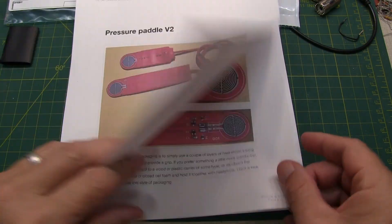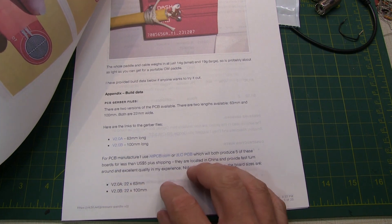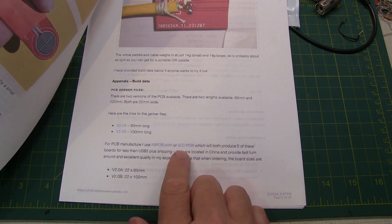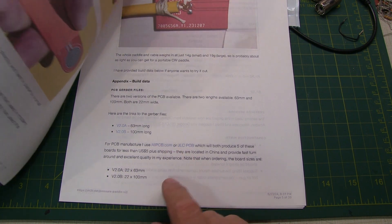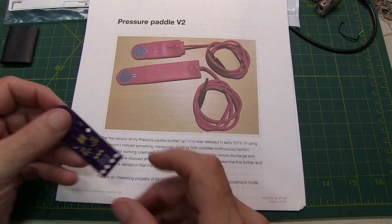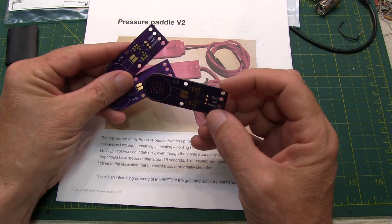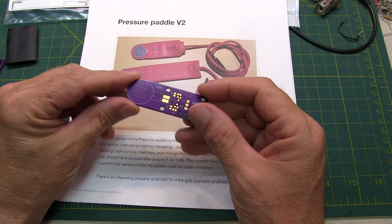Links to the printed circuit board design files are found in the blog as well, and you can go get them manufactured yourself from a number of different places. The author recommends allpcb.com or JLCPCB. I chose to order them through Oshpark. I found a pretty decent deal to get three of these boards for about $10, and they took me about two to three weeks to get.